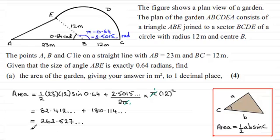And rounding that to the accuracy that was asked for, one decimal place, that's going to be 262.5. And the units will be square metres. And I'll just put there to one decimal place, 1dp for short.